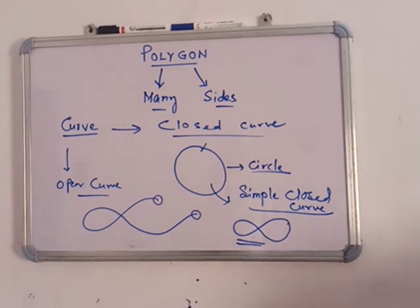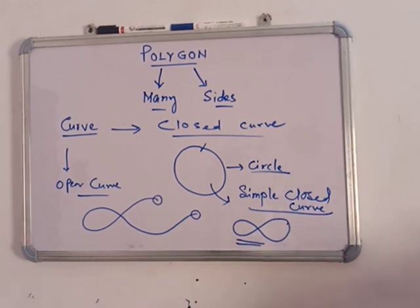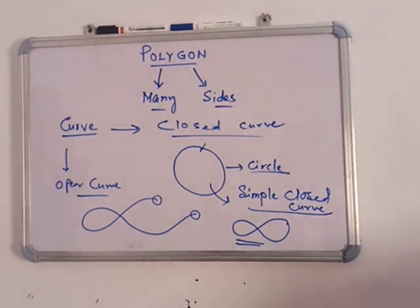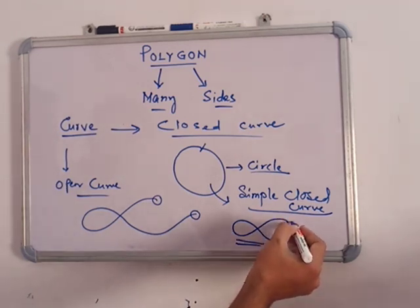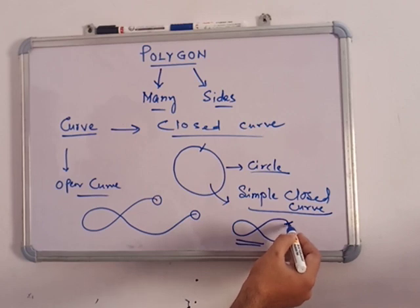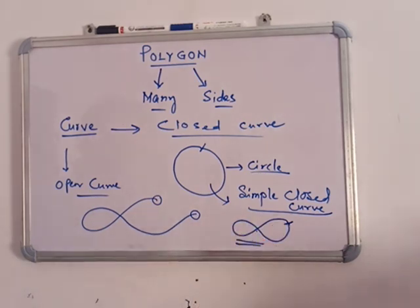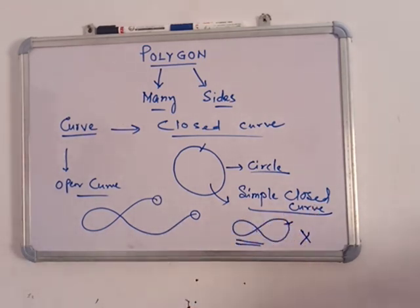Now we are going to discuss the sub-part of the closed curve, that is the simple closed curve. A simple closed curve means a closed figure which does not intersect itself. If I draw a figure where the curve intersects with a point, that is not a simple closed curve. So a circle is a simple closed curve.